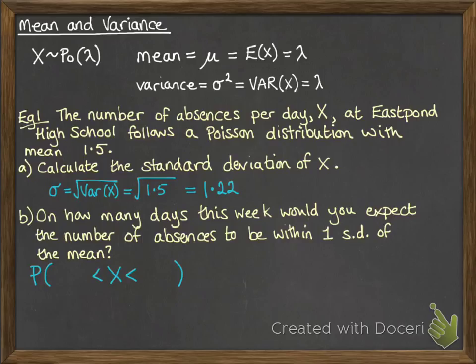So that's 1.22 above the mean and 1.22 below the mean. So we need to do 1.5 take away 1.22, which would be 0.28, and 1.5 add on the 1.22 will be 2.72.